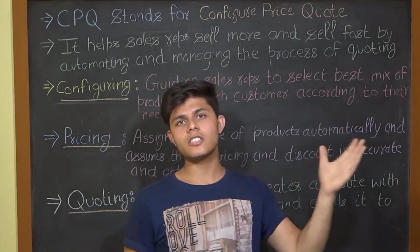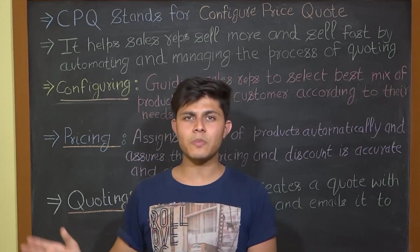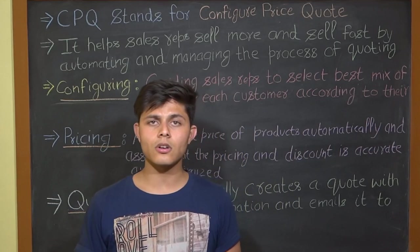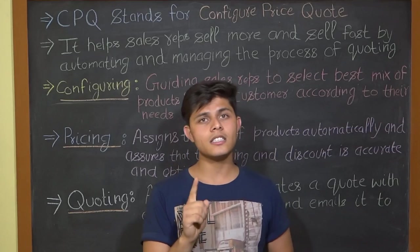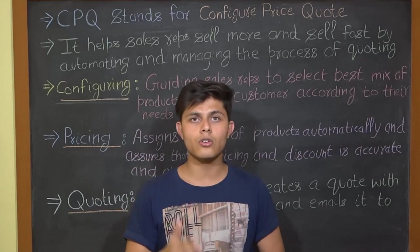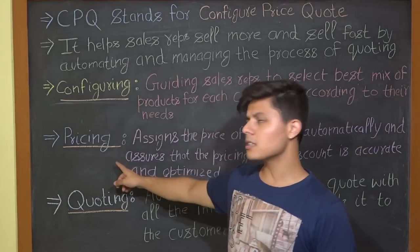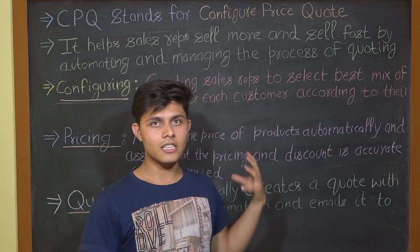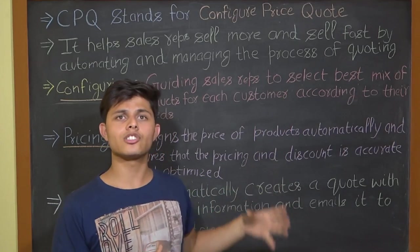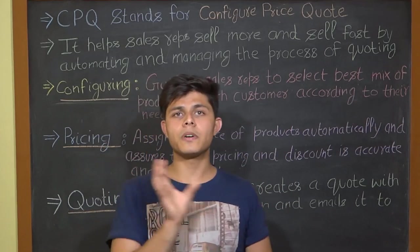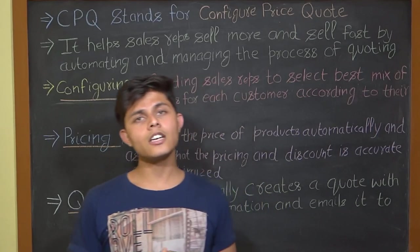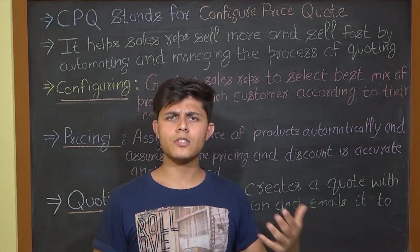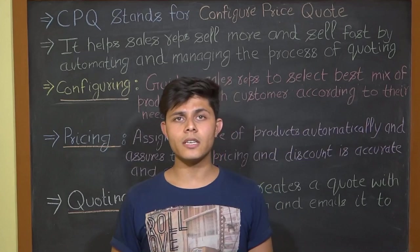The second term is Price. Pricing assigns the price of products automatically and assures that pricing and discounts are accurate and optimized. In the traditional sales process, getting list prices from spreadsheets was time-consuming and error-prone — a single digit could change the price of a whole quote. The CPQ tool assigns the price of each product or service automatically based on the list price maintained in your CRM or system.